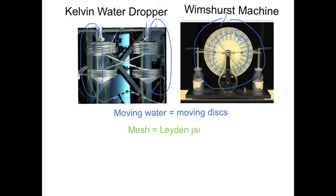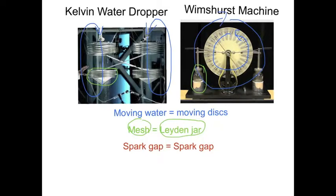Another similarity that I noticed is how they store the charge. So with the Kelvin water dropper, the charge is stored on the wire meshes, and as the charged water comes through, the wire meshes collect the charge. With the Wimshurst machine, the charge is collected on Leyden jars. So there's similarities there that they both store charge.